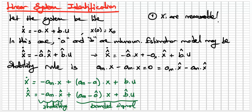Because if we have a bounded signal, we can estimate our model, since x̂_dot does not go to zero or infinity — this state always goes to zero. This is our stabilization rule: the signal must be bounded, and a_m must always be greater than zero. This is why we need to add the a_m*x or a_m*x̂ terms. Now, how can we create the estimation dynamics? We need to define the error dynamics.